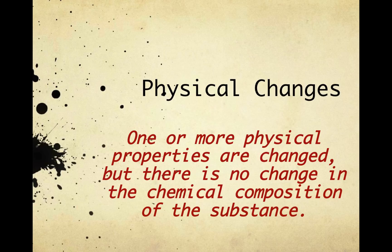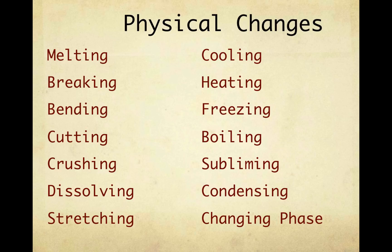Let's consider physical changes. A physical change is when one or more physical properties are changed, but there is no change in the chemical composition of the substance. Let's look at some examples of physical changes: melting, breaking, bending, cutting, crushing, dissolving, stretching, cooling, heating, freezing, boiling, subliming, condensing. Any change of phase is a physical change.